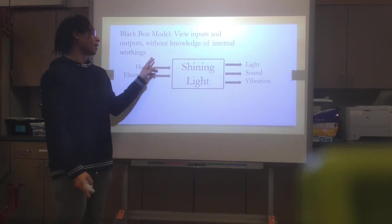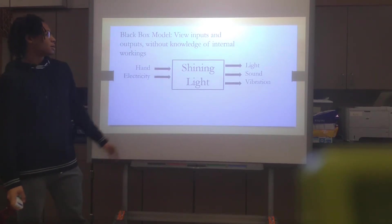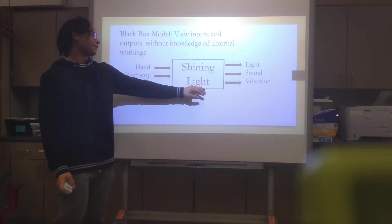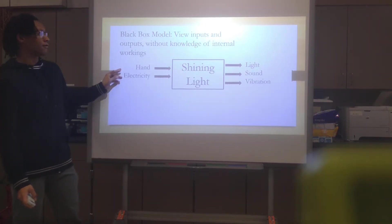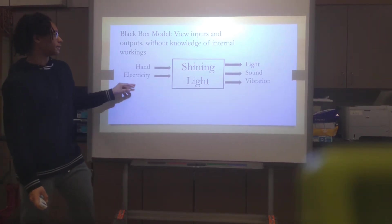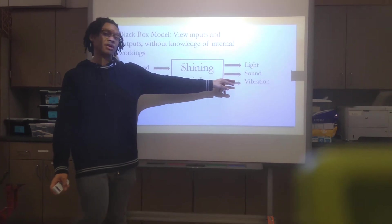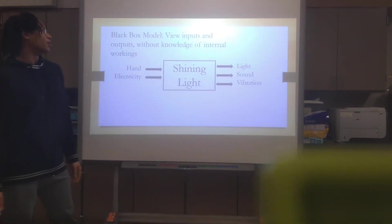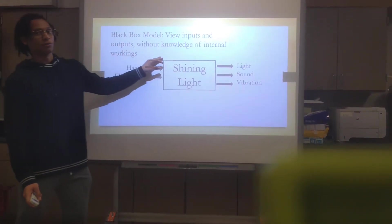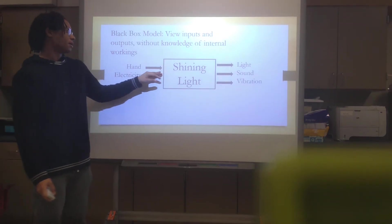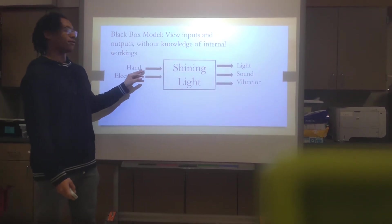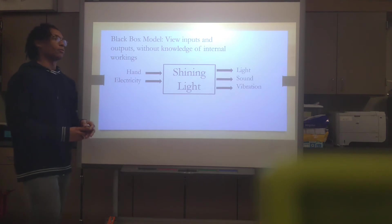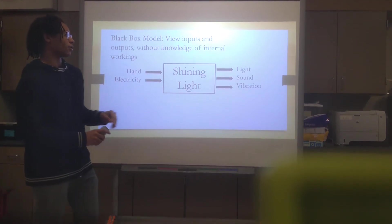And here's our black box model. Our product is a shining light. Our inputs were from our hand and electricity. Our outputs were light, sound, and vibration. This is without the knowledge of the work of the flashlight internally. We use this for brainstorming. It helps us generate more ideas for making a new flashlight.